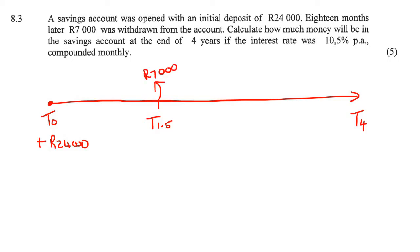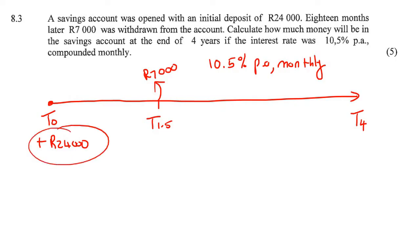The interest rate is going to be fixed at 10.5% per annum, but that is compounded monthly. We know how we do these questions — we just look at each amount. So we start with the 24,000.